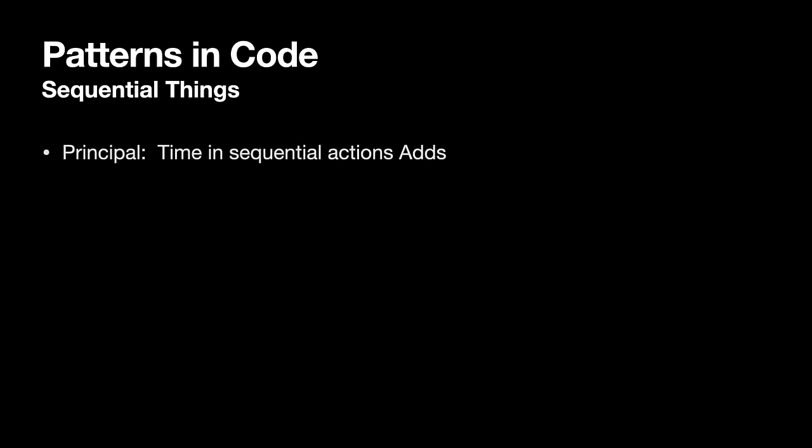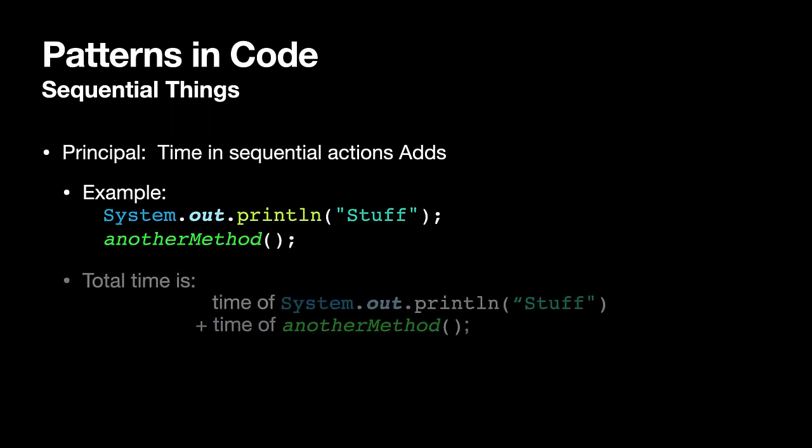Same pattern holds true in code. We've got an example where I'm doing one operation and then doing another operation. The total amount of time is just the sum of time for the first operation plus the time for the second operation.